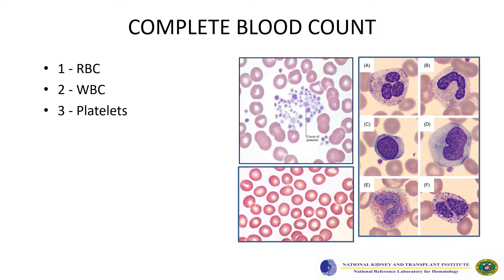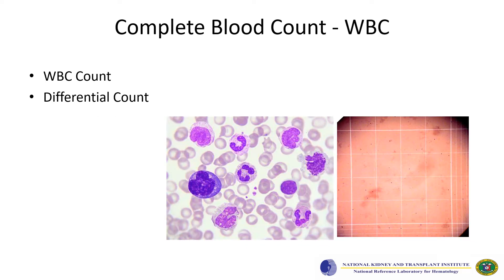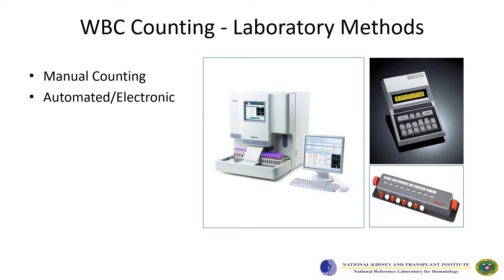CBC, or complete blood count, includes quantification of RBCs, WBCs, and platelets. White blood cells are assessed in complete blood count through the WBC count and through the differential count, and WBC counting could be done manually or automated.